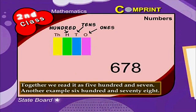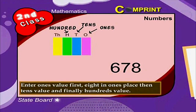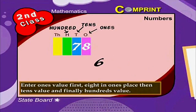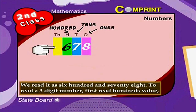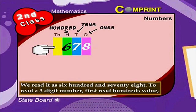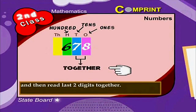Another example: 678. Enter the ones value first — eight in ones place — then the tens value, and finally the hundreds value. We read it as six hundred and seventy-eight. To read a three-digit number, first read the hundreds value and then read the last two digits together.